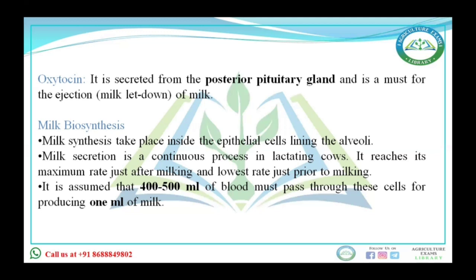Regarding the composition of milk of different mammals — cow, buffalo, goat, sheep, and camel: the highest lactose is found in buffalo followed by cow, and the lowest is in camel followed by goat. For fat, the highest is in sheep followed by buffalo and the lowest is in cow followed by goat. Highest protein is in sheep followed by buffalo, and lowest is in camel followed by goat. Highest SNF is in sheep followed by buffalo, lowest in camel followed by goat. Highest ash is in sheep followed by goat and lowest in camel followed by goat.